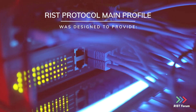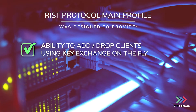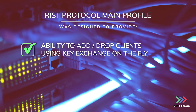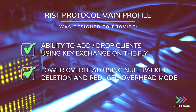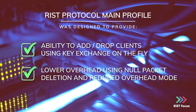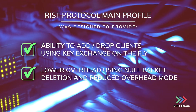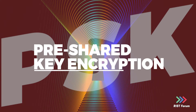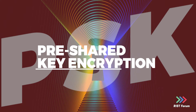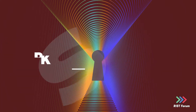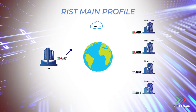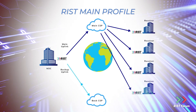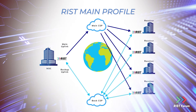RIS includes authentication, the ability to add and drop clients using key exchange on the fly, and reduces overhead using null packet deletion going to the receivers. RIS main profile uses PSK pre-shared key encryption with added authentication to deliver to the tunnel, distributing streaming to authenticated clients using multicast running inside a tunnel.